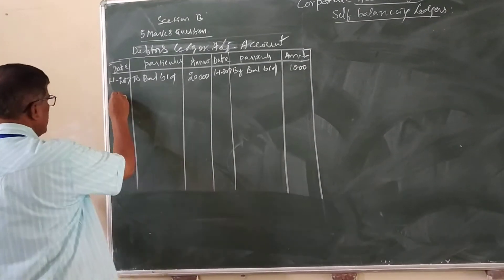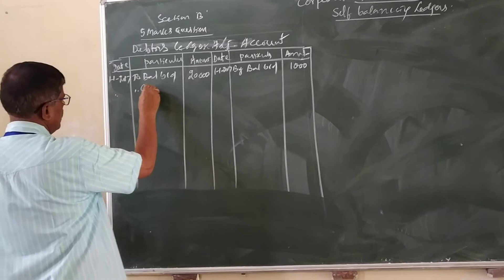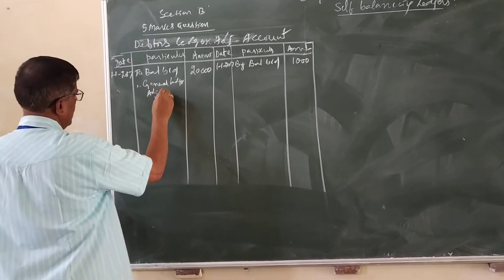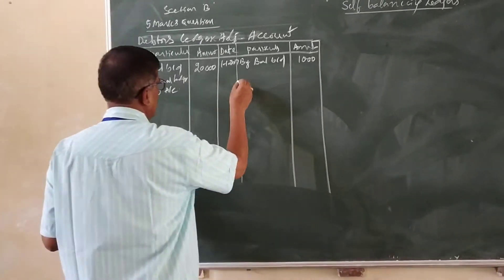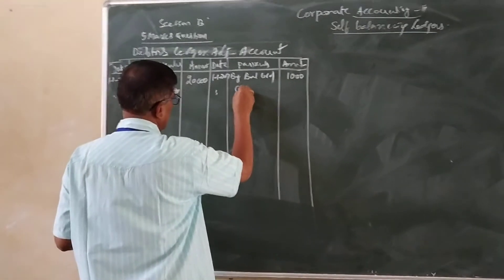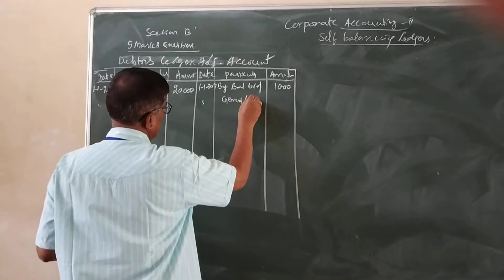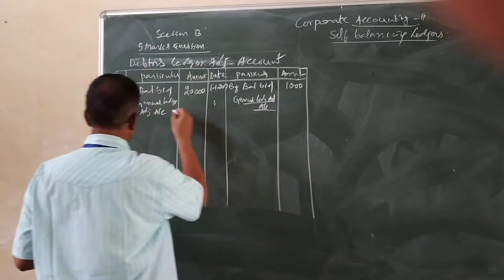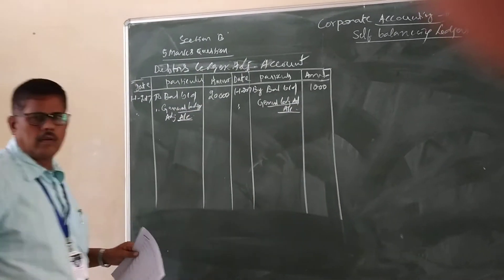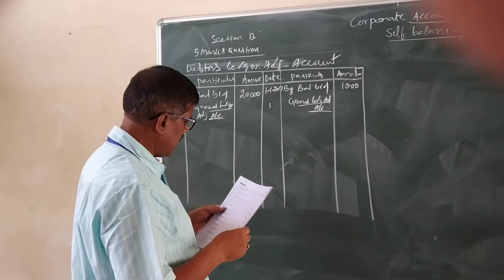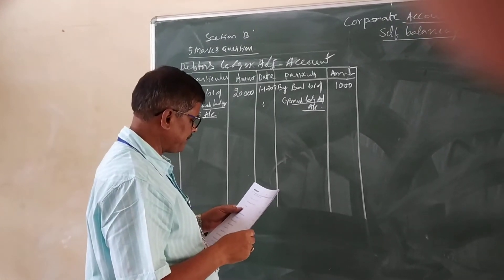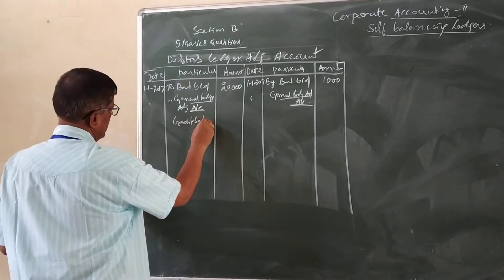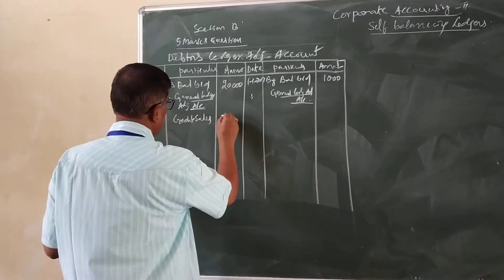General ledger adjustment account. The credit side also says general ledger adjustment account. Next item is credit sales, credit sales 50,000 rupees.